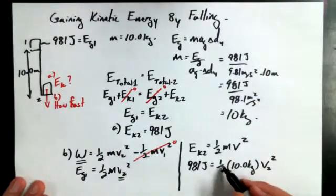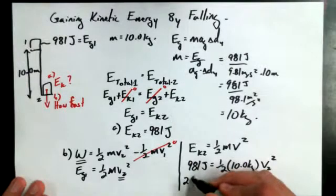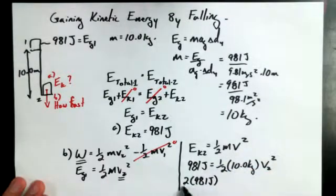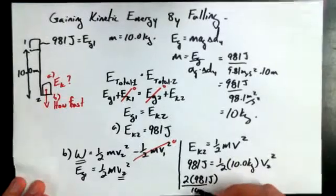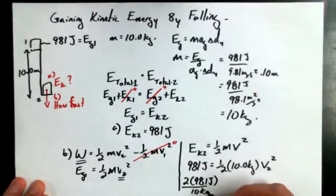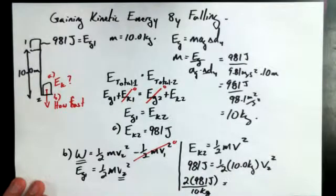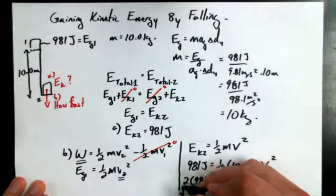And so now I can multiply both sides by two and I get two times 981 joules. Divide both sides by 10 kilograms and I divide by 10 kilograms. And I would be left with v2 squared. But let's square root both sides and just be left with v2.